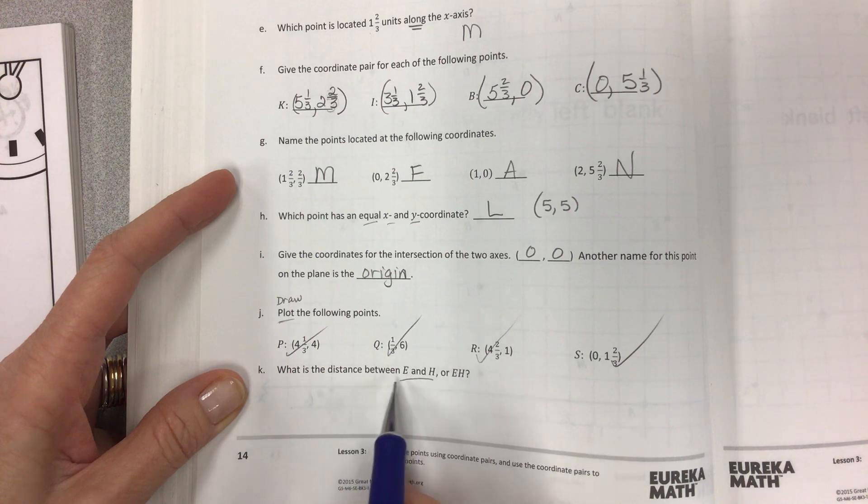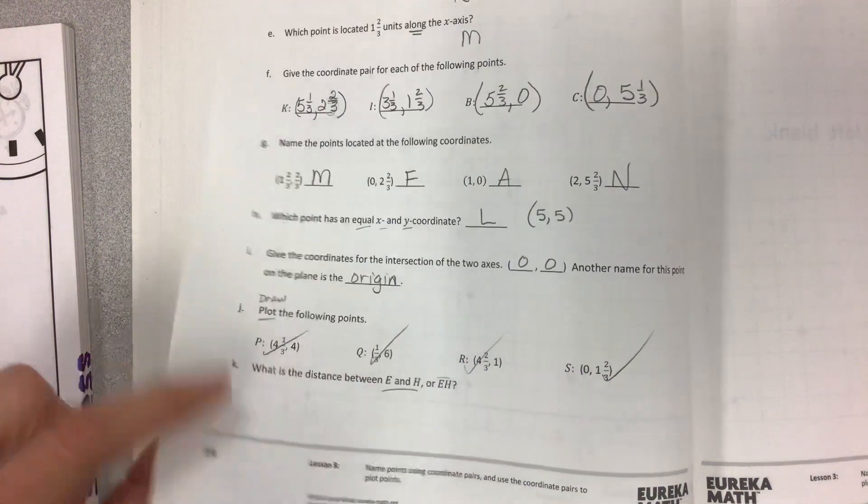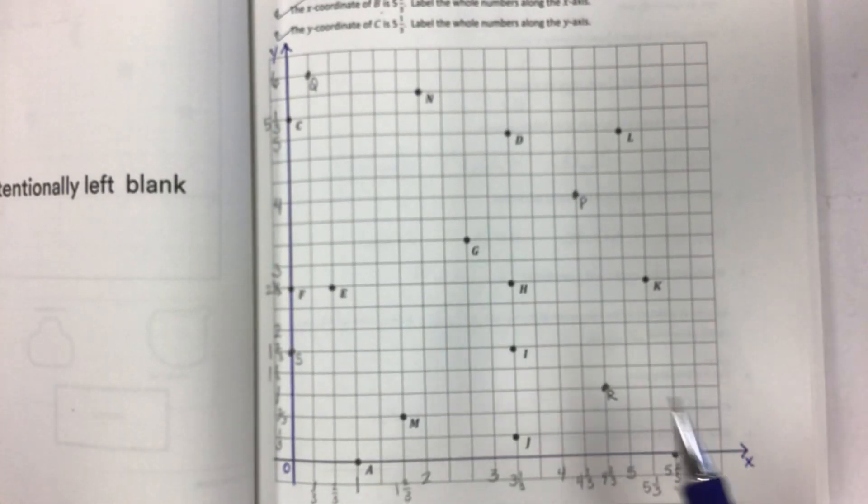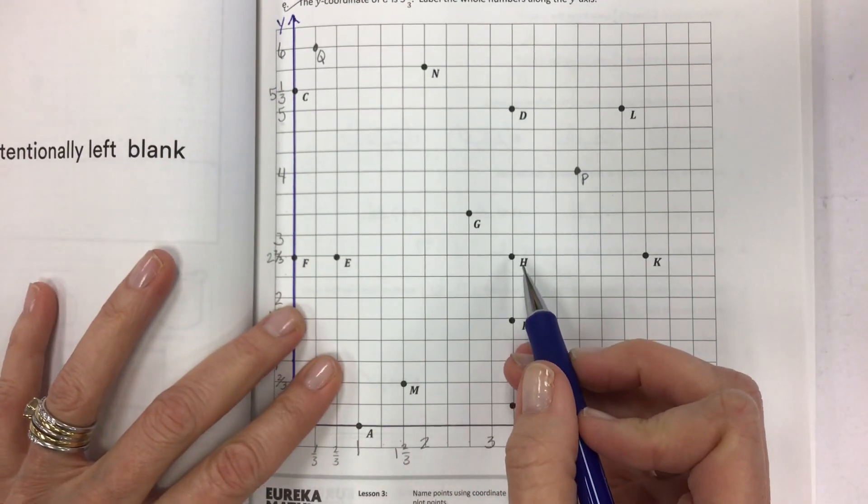What is the distance between E and H or line E-H? So the distance between two points comes up to be like a subtraction problem. So look at where E is and look at where H is.